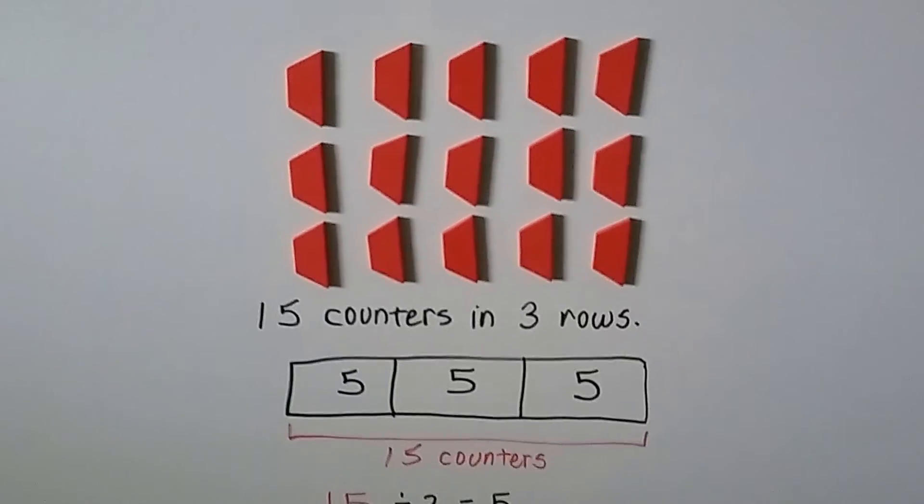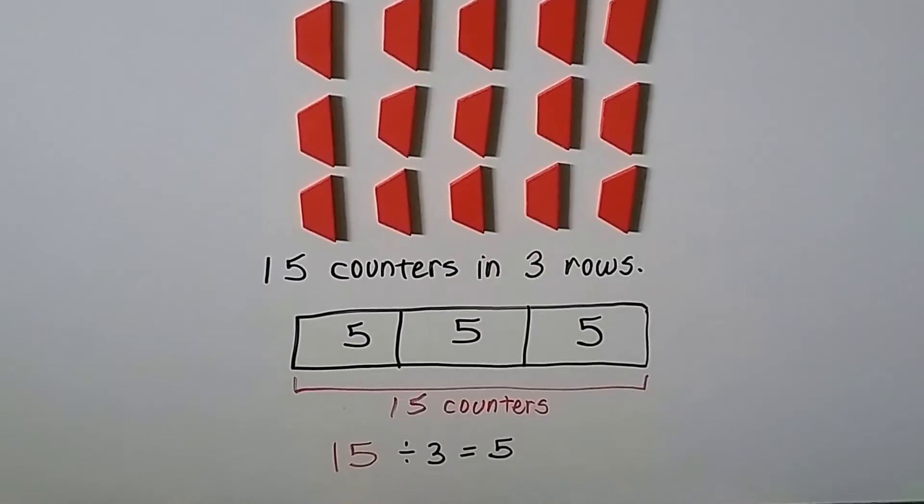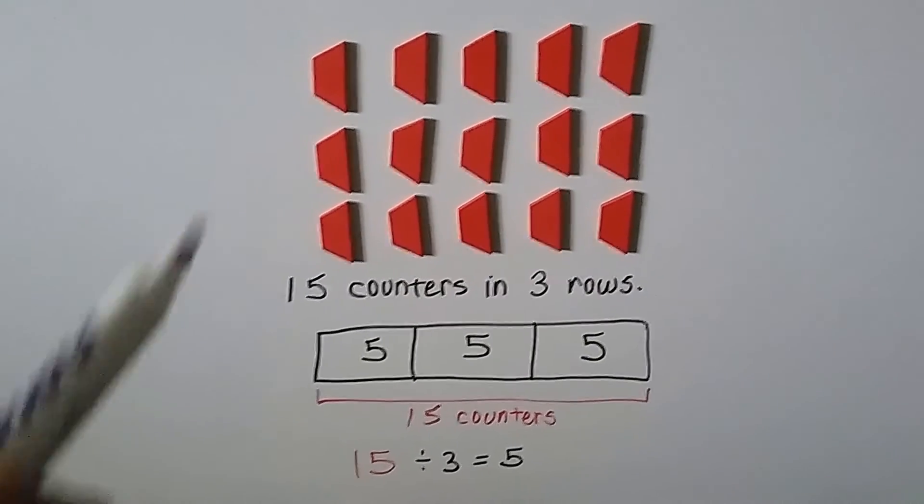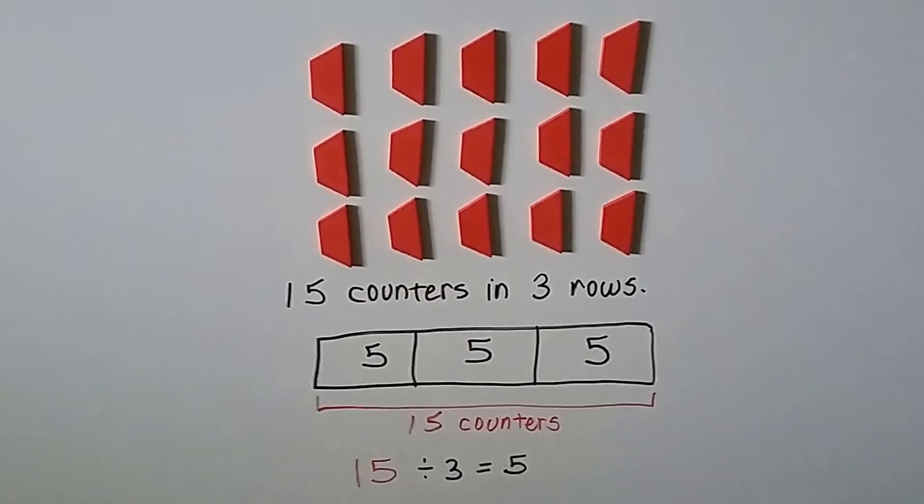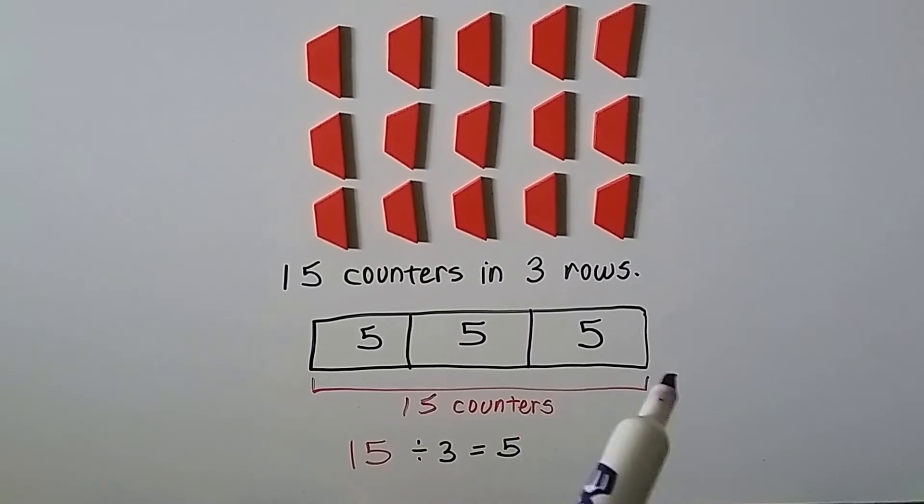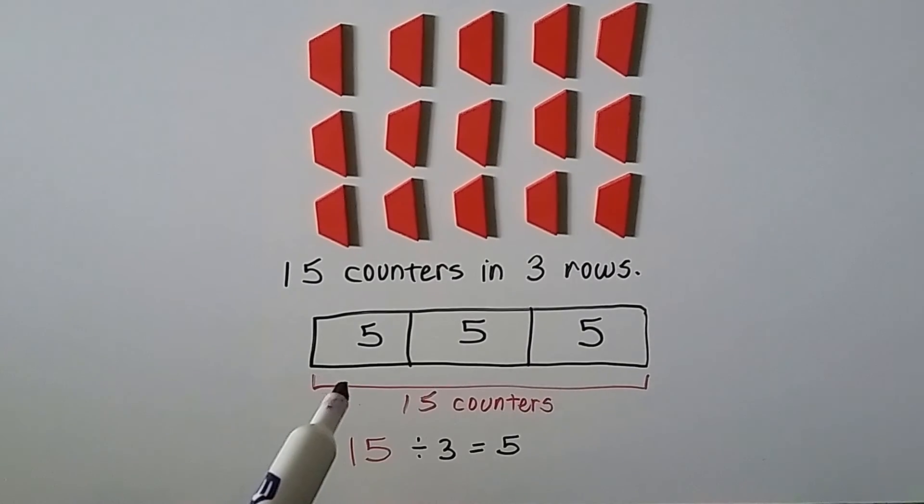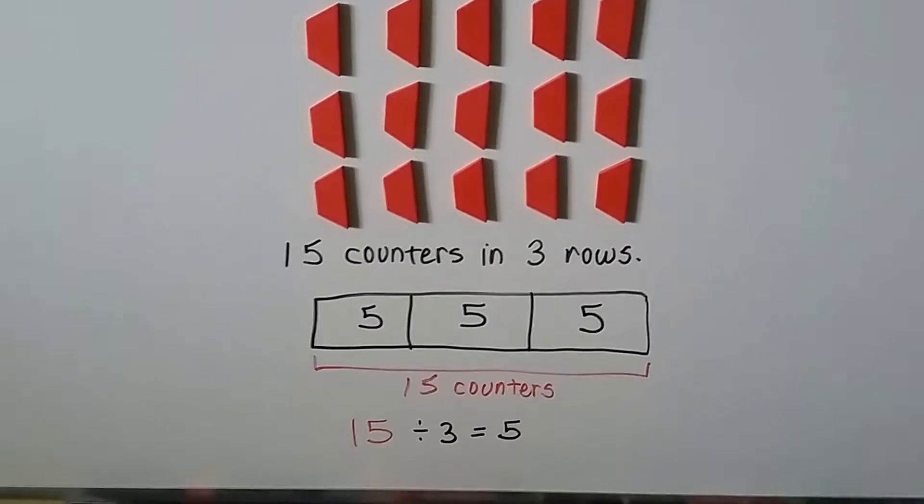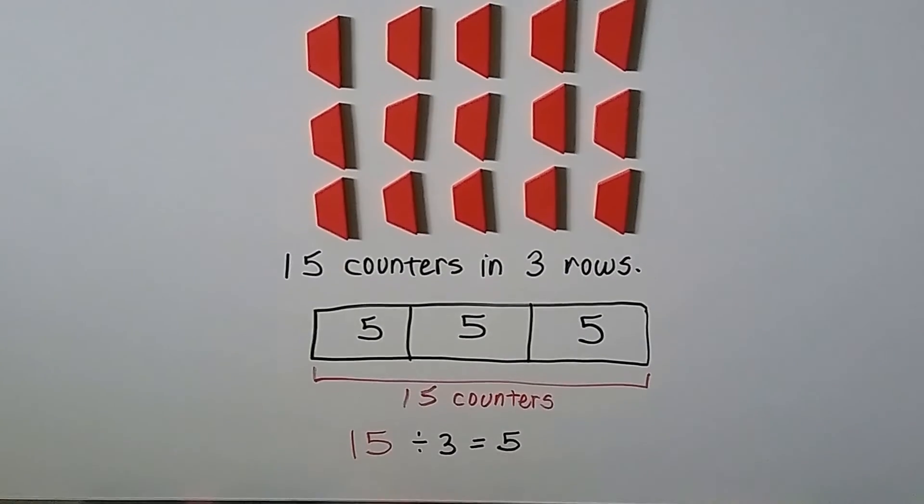Now look at this. We've got 15 counters in three rows. Row 1, row 2, row 3. We have 5 in each row, don't we? So the whole rectangle is the 15 counters and they're in groups of 5. 15 divided by 3 equals 5.